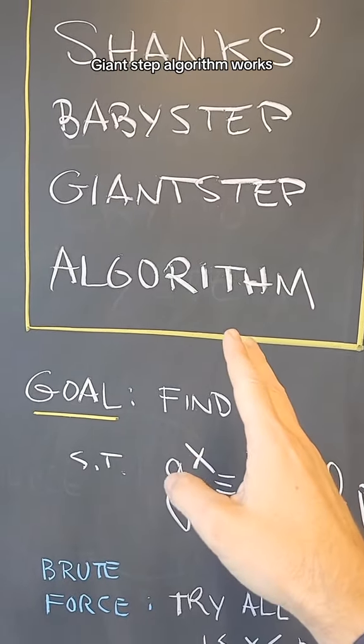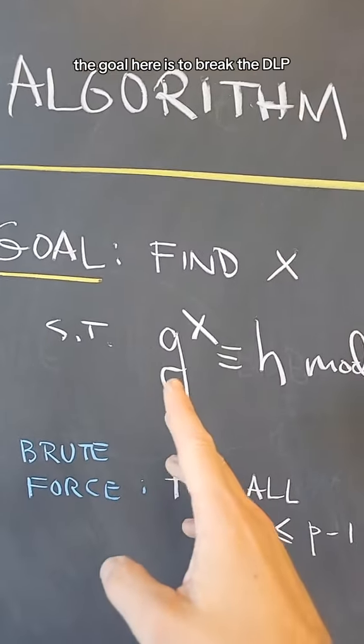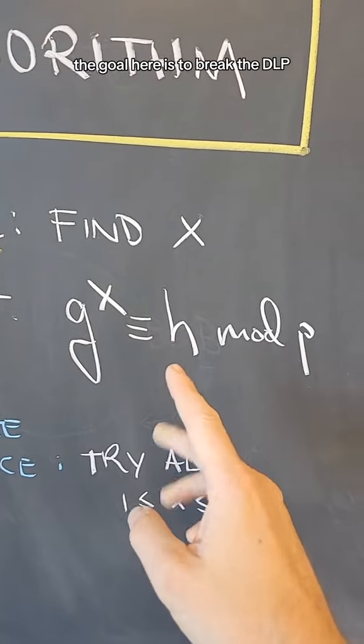Let's see how Shanks' baby step giant step algorithm works. The goal here is to break the DLP, the discrete logarithm problem.